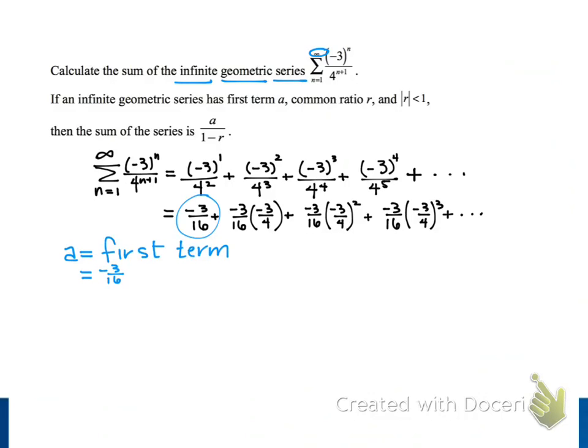The variable r represents the common ratio of the series. When we list the terms that we're adding up, we can see that each new term is equal to the previous term multiplied by one more factor of negative 3 fourths. We saw negative 3 fourths, negative 3 fourths squared, negative 3 fourths cubed. Each time we have one more factor of that negative 3 fourths, and so that factor is the common ratio of our series.